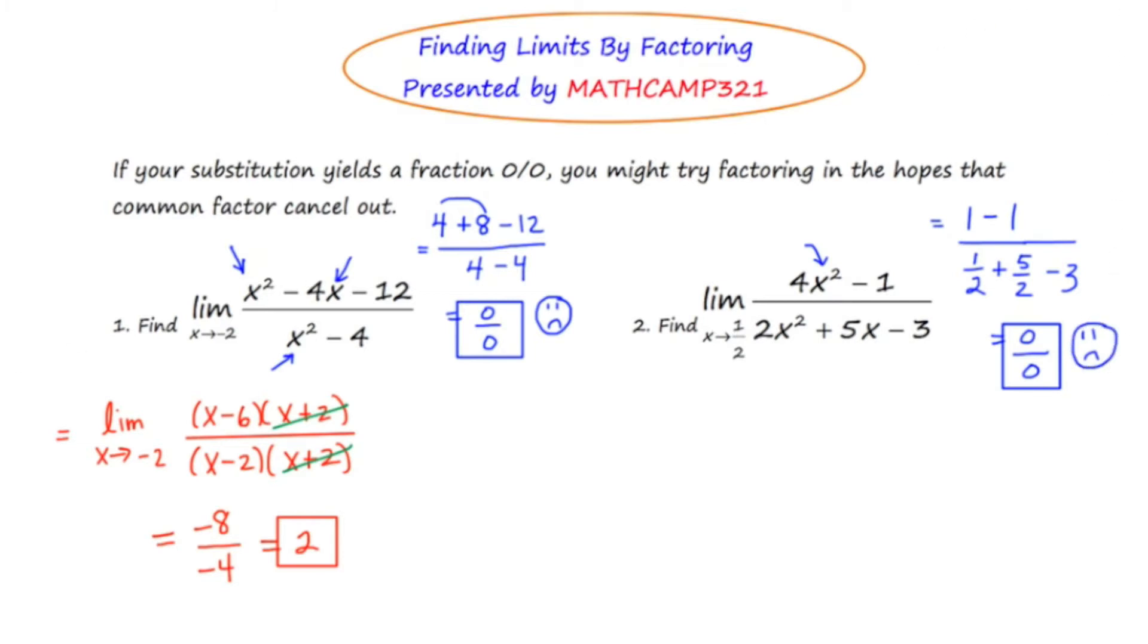And in this case, what I'm going to try is factoring. And maybe if I factor, there will be factors that cancel out and I'll be able to substitute at that point. So let's start by rewriting the limit question. Now the upstairs is a difference of two squares. I end up with 2x plus 1, 2x minus 1.